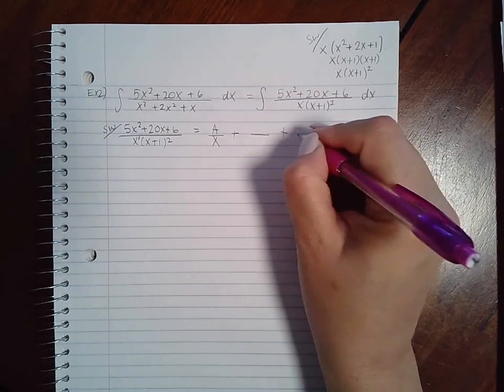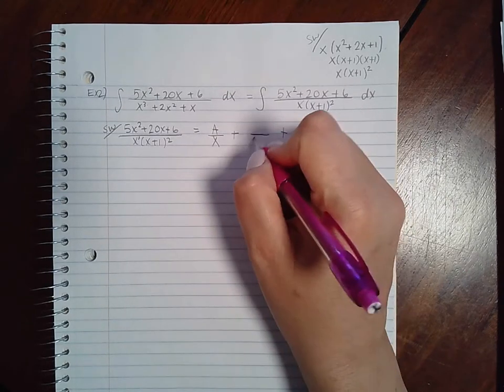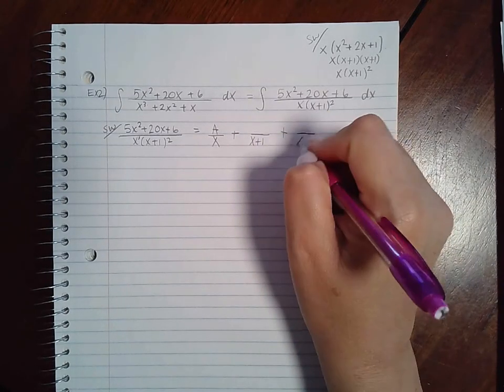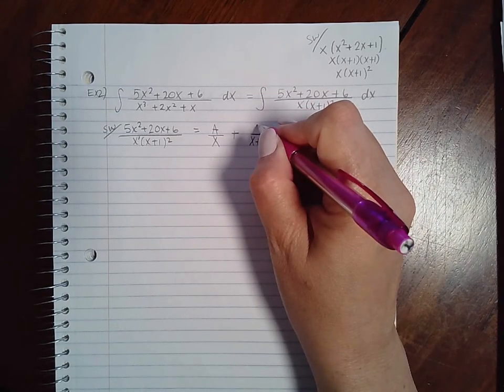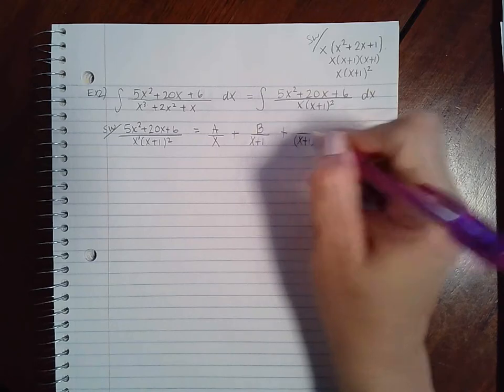However, this factor has an exponent of 2, which means I will need two fractions to represent that factor: x plus 1 by itself, and then x plus 1 squared, both still with a constant coefficient in the numerator.